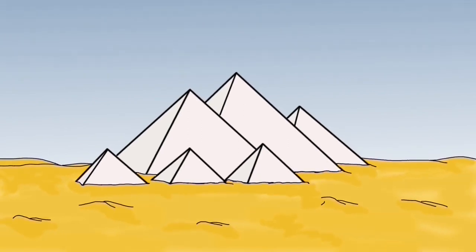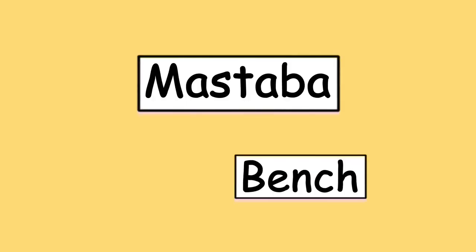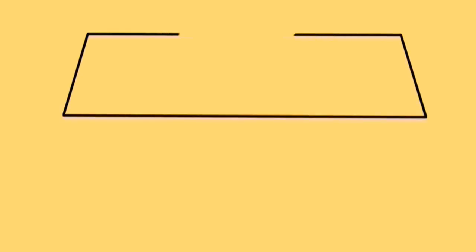Before the pyramids, Egyptians had been burying their pharaohs and high officials under mastabas. The word mastaba, meaning bench, was a one-storey rectangular building with a flat roof and slanted sides, constructed out of mud bricks.